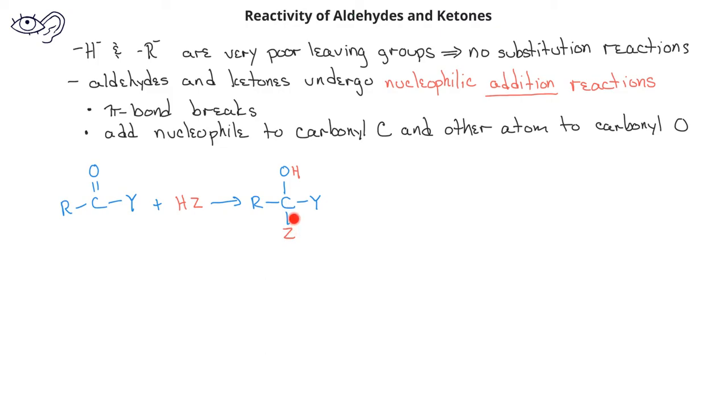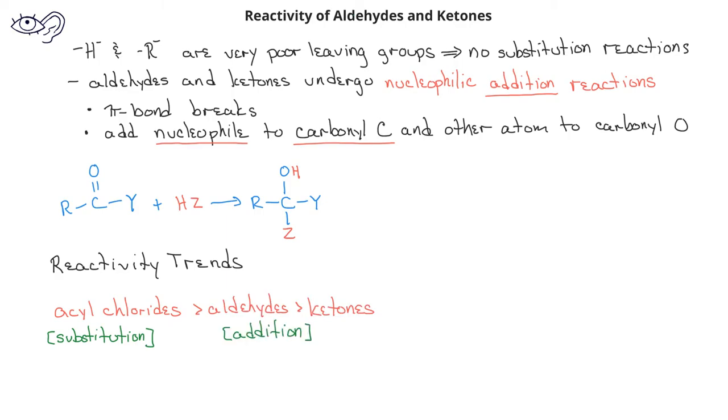When we compare the general reactivity trends of all of these carbonyl compounds, we'll see that the acyl chlorides will be most reactive and undergo substitution reactions. Aldehydes and ketones will be next most reactive and they'll undergo addition reactions. Esters and carboxylic acids are next most reactive and amides are least reactive. All three of these last types of carbonyl compounds will undergo substitution reactions.